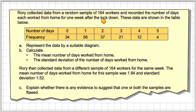Rory collected data from a random sample of 164 workers and recorded the number of days each works from home for one week after the lockdown. These data are shown in the table below. The number of days: 0, 1, 2, 3, 4, 5, and then the frequencies.